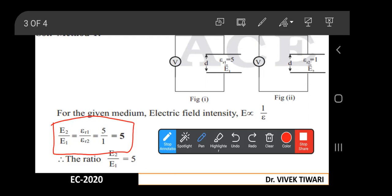So we get the ratio of electric field E2 upon E1 that will be 5. The ratio between E2 and E1 will be 5.